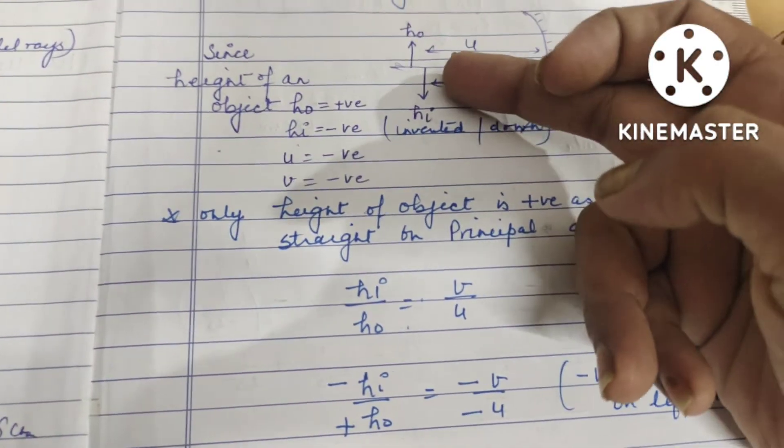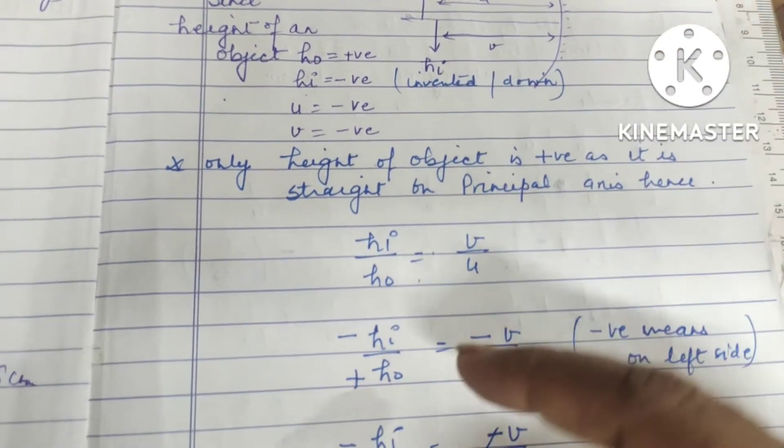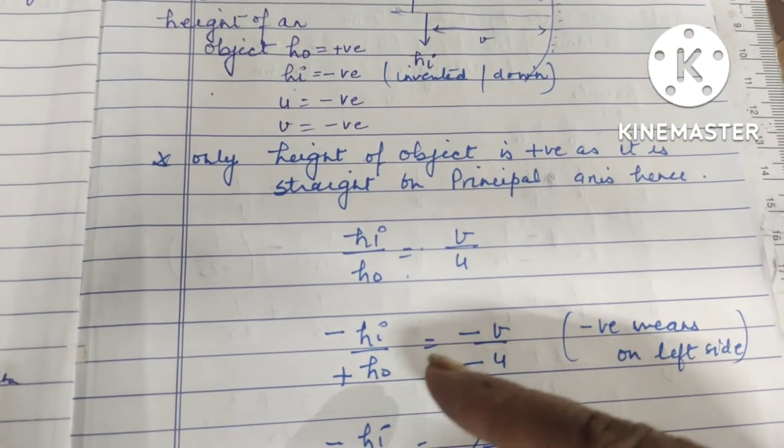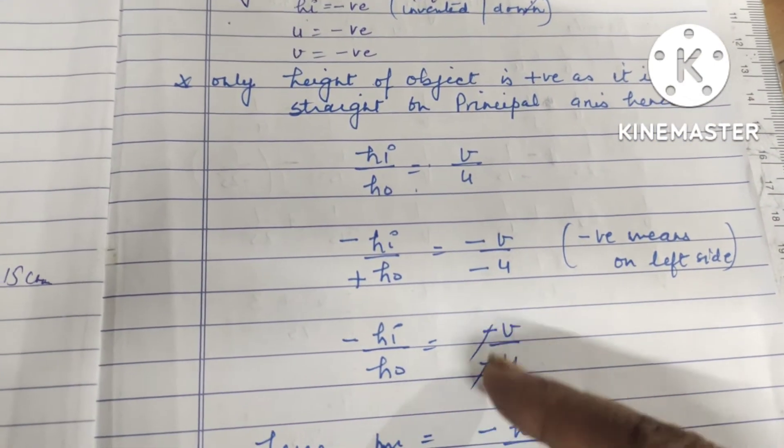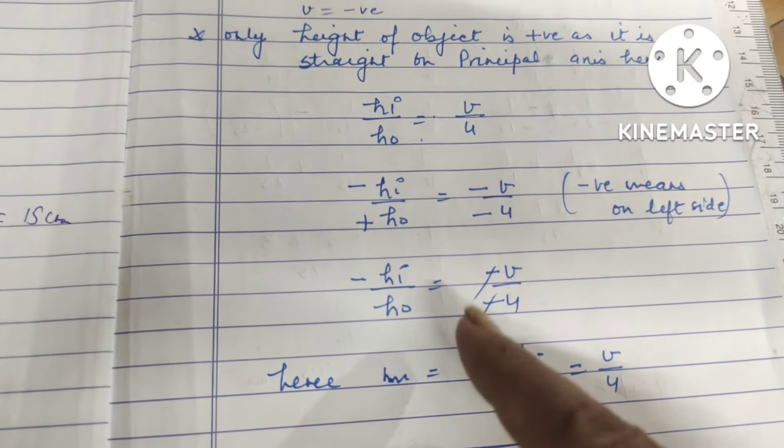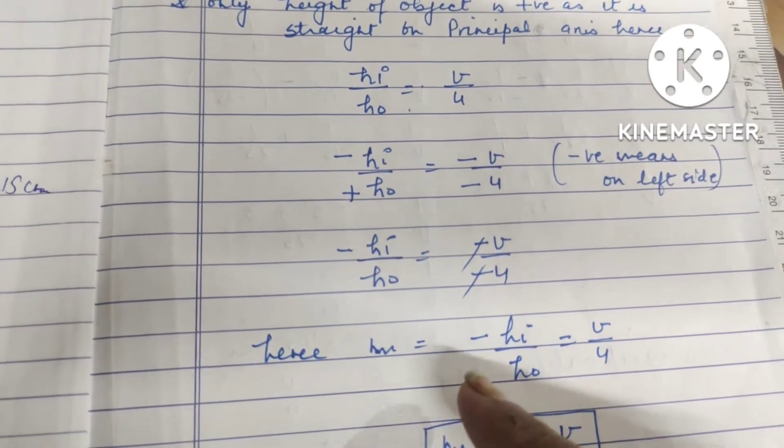Since height of the image is negative, why negative? I hope it is clear because it is coming downward. Height of the object is positive. Rest both are negative, why? Again, because they are on the left side.